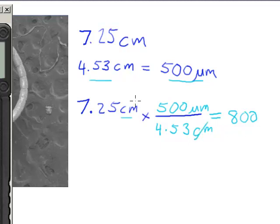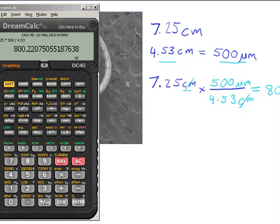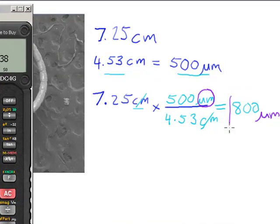And the centimeter units cancel, and the units that are left are micrometers. So it's 800 micrometers, or 800 microns, is the size of that part.